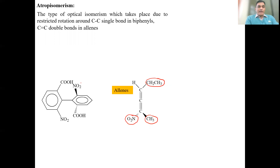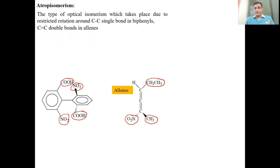At the ortho position of biphenyls, we have placed one NO2 group in one ring, and two bulky groups in the second ring. Due to these bulky groups, the rotation becomes restricted. But one more thing to keep in mind: since everything in the universe wants to be stable, the two rings will not be in the same plane, because if they were in the same plane, there would be steric hindrance between the bulky groups.